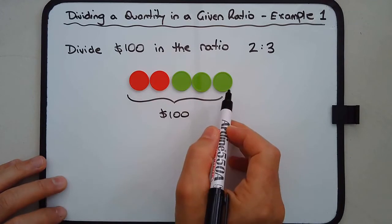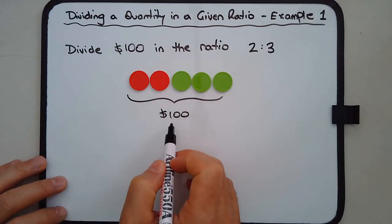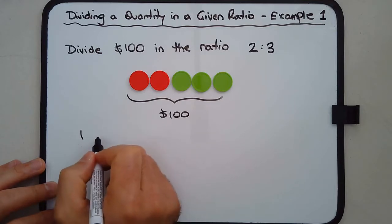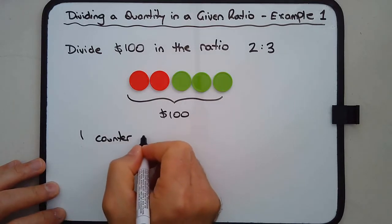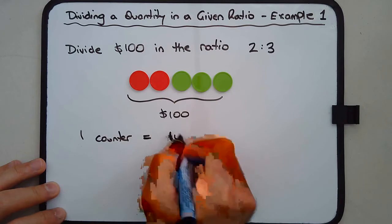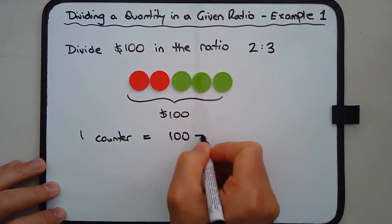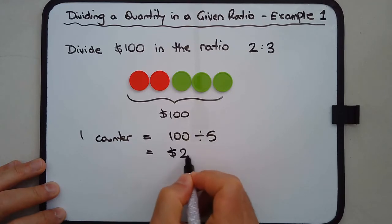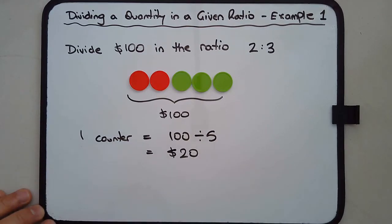So there's five counters, all up it's $100. So we're going to work out the value of one counter first. One counter is equal to $100 divided by 5, which gives us $20. So that's the value of one counter.